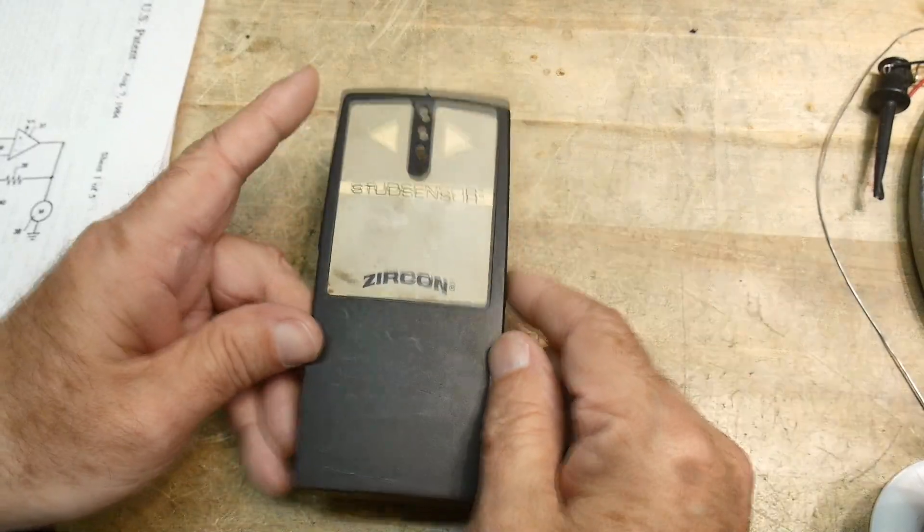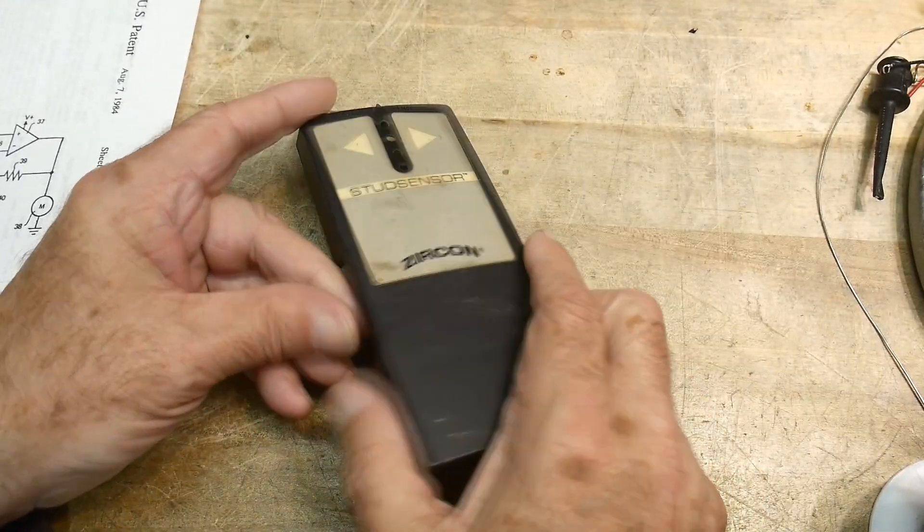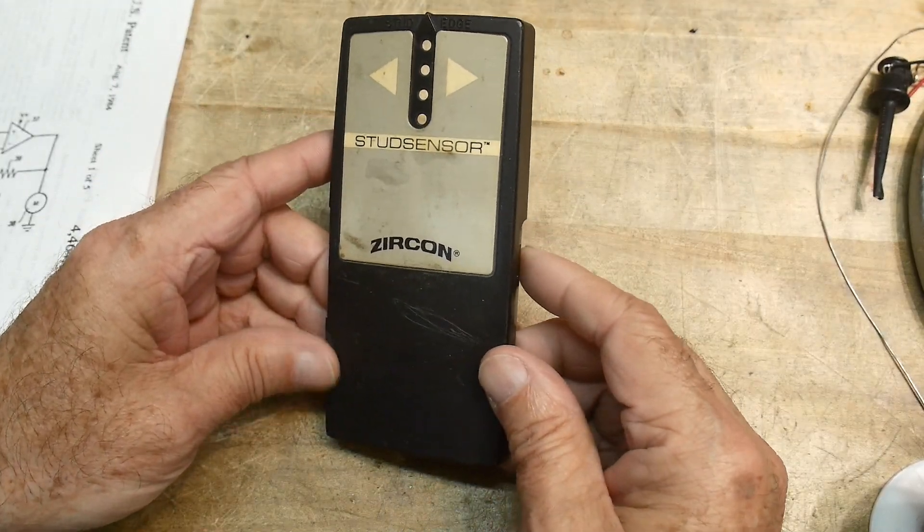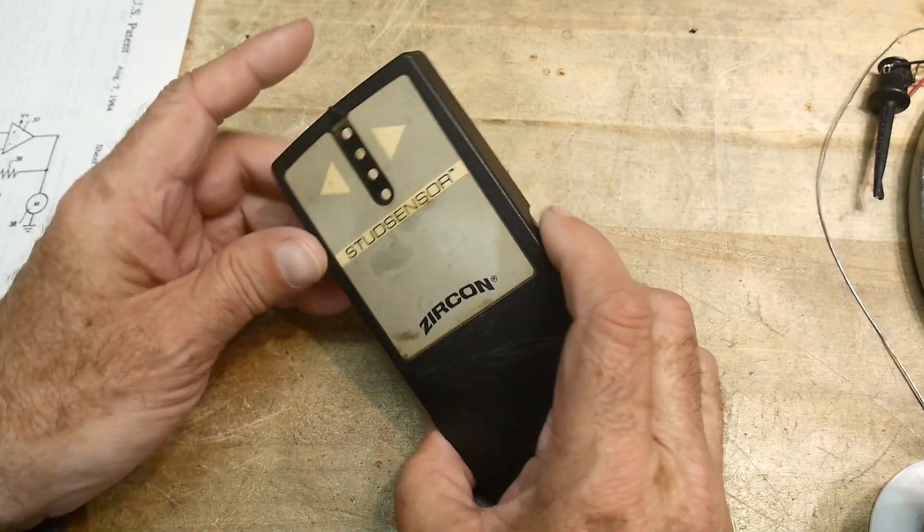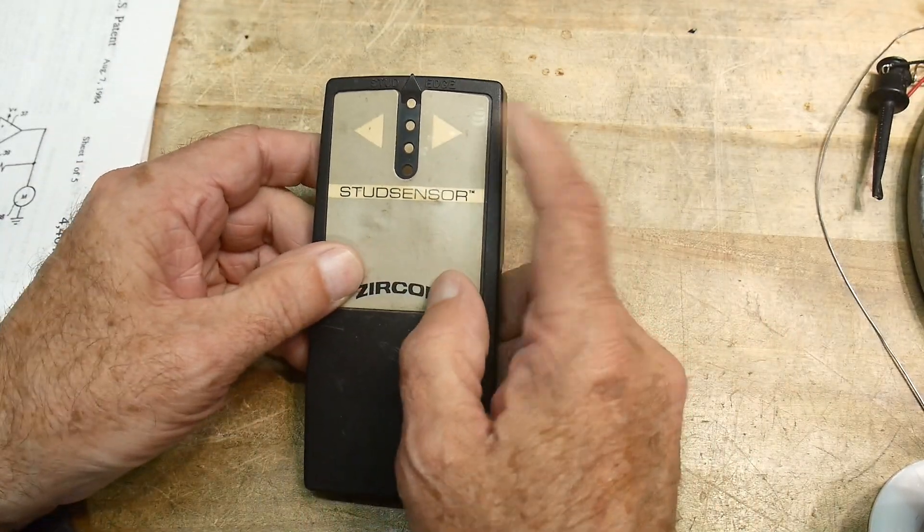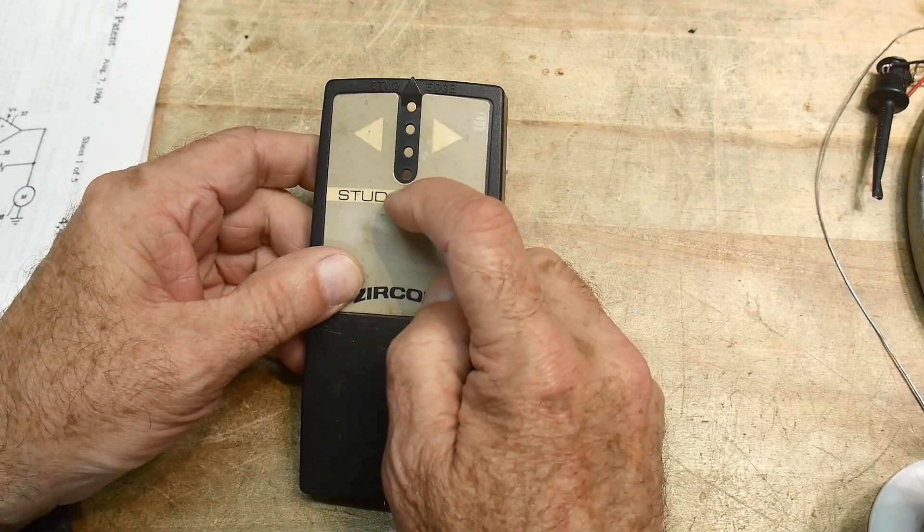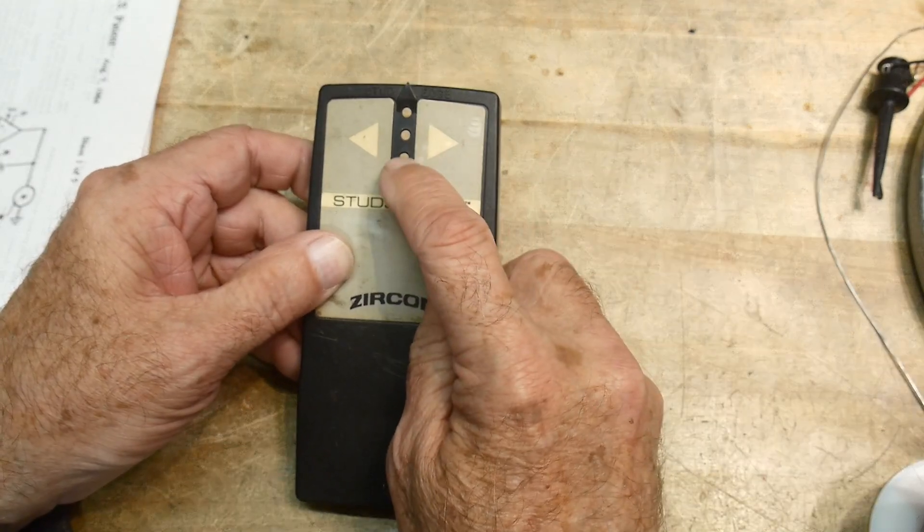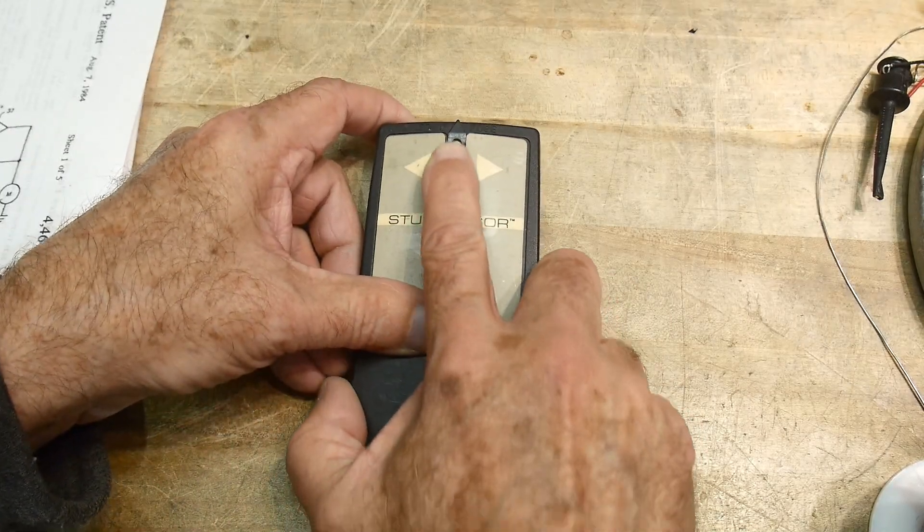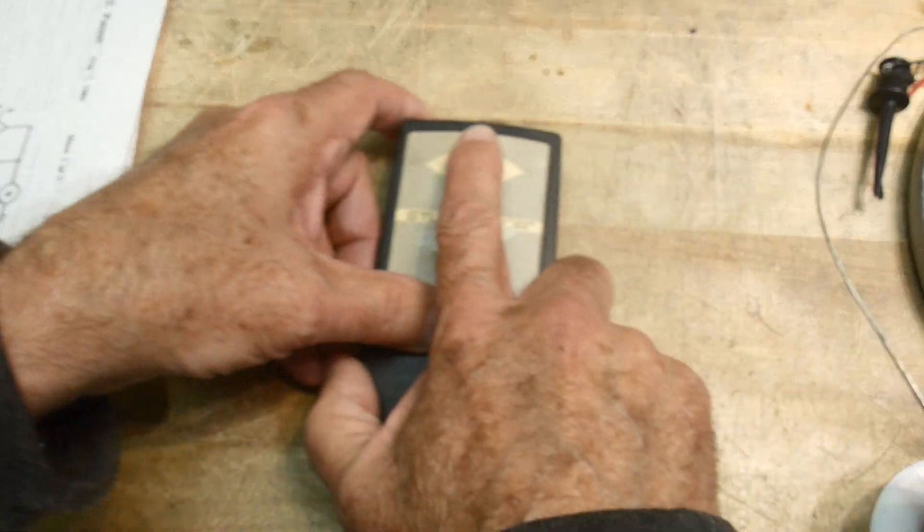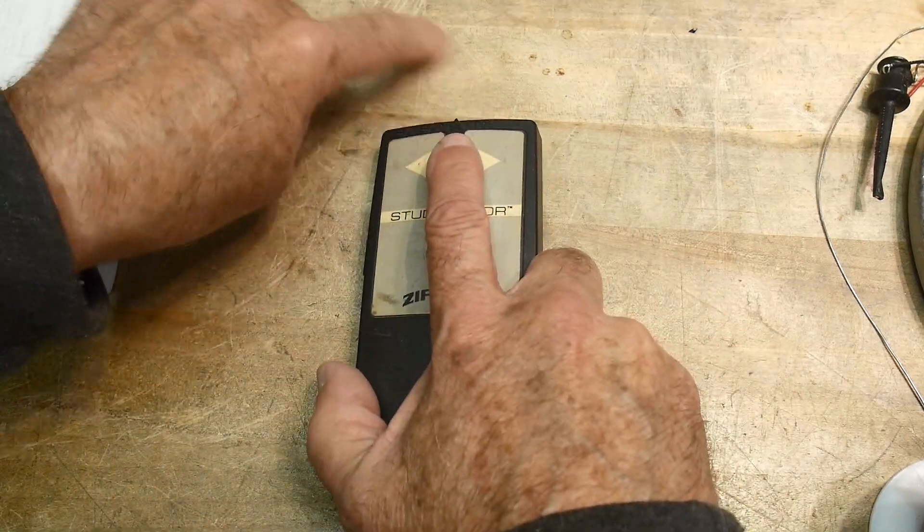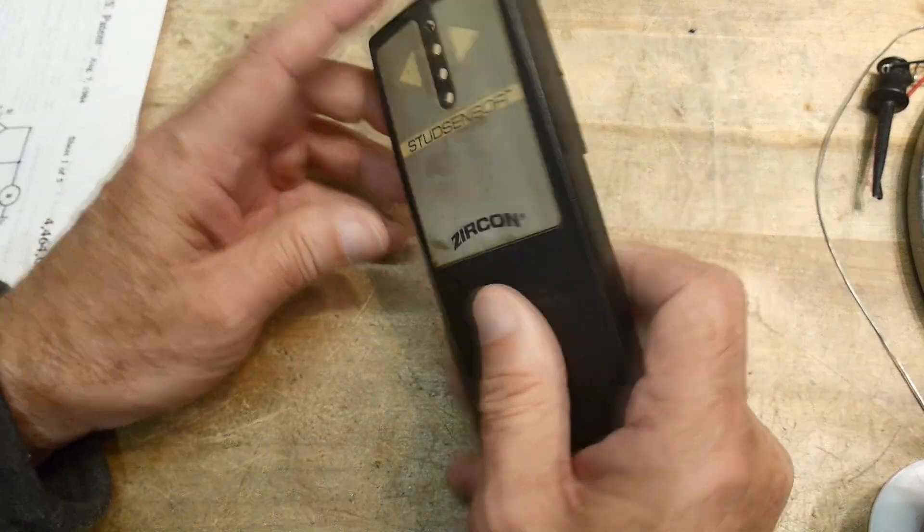What's on the bench is an old stud finder. This is my old Zircon stud finder that went bad on me. I think it's probably 30 or 40 years old. The way that it worked is it had these LEDs that lit up. You move it across and the LEDs will get bigger and then smaller and bigger and smaller. You try to figure out where the middle was and then you drew a line.